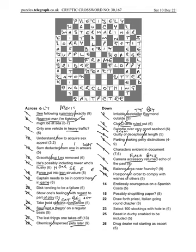13 down, Postpone, in order to comply with wishes of others, is Defer is already in there, and another easy one, Endlessly Courageous is Brave, without the end, on A, gives you Brava for a Spanish Costa.